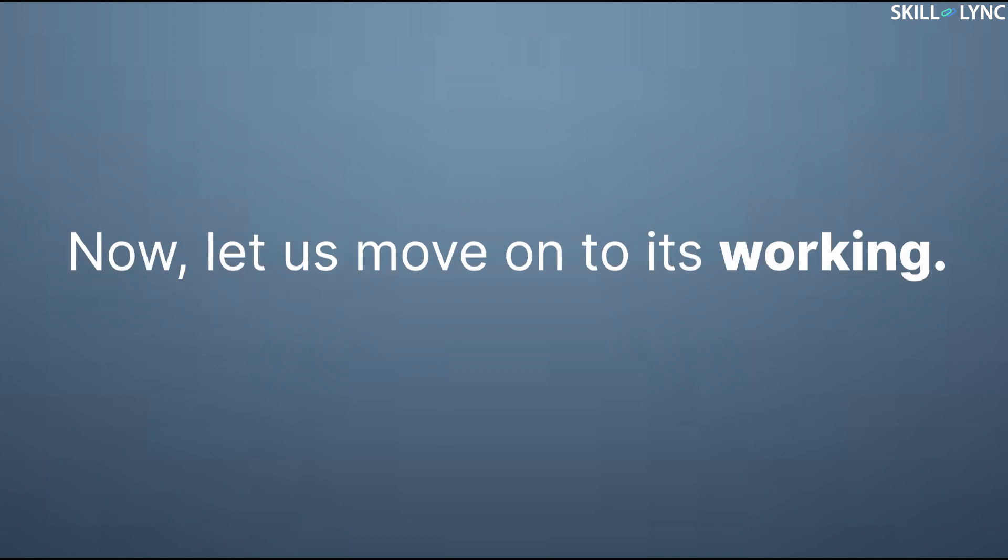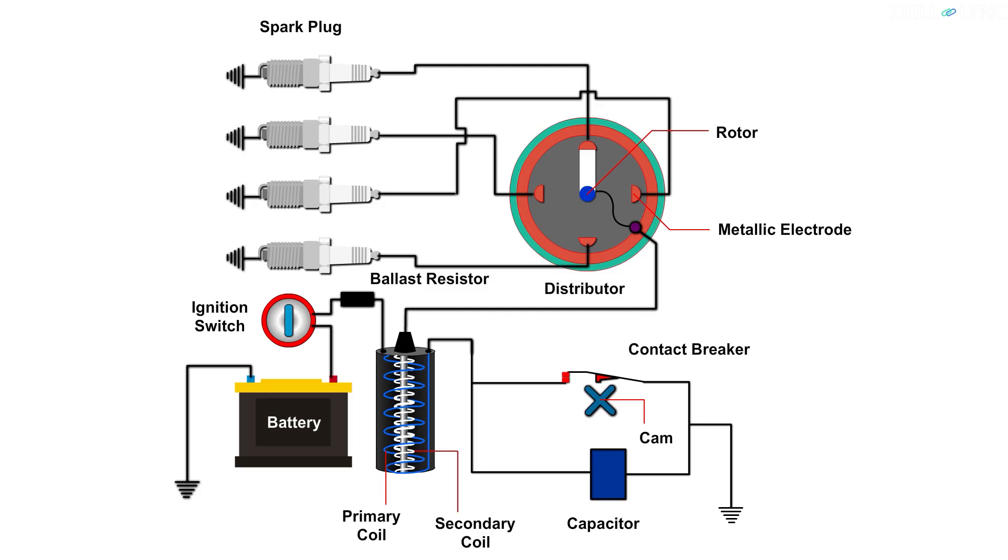Now let's move on to how it works. When the ignition key is switched on and the contact breaker points are closed, a low-voltage current flows in the primary circuit. The current flows from the battery through the switch, ballast resistor, and the ignition coil to the contact breaker, and the primary circuit gets completed at the ground.